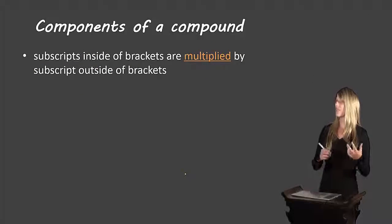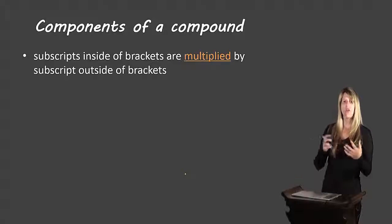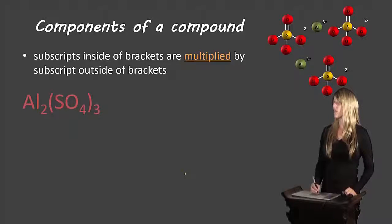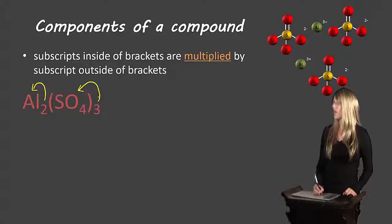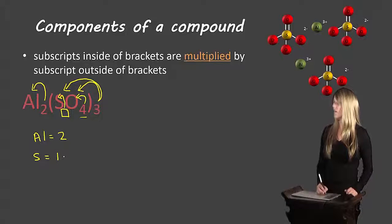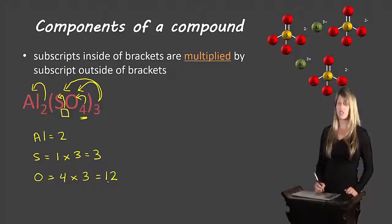Our last rule: subscripts inside brackets are multiplied by subscripts outside of brackets. Let's look at Al2(SO4)3. The two applies to the preceding aluminum. The three outside the brackets applies to both sulfur and oxygen. Sulfur has no subscript inside, meaning one, multiplied by three outside gives three sulfurs. Oxygen has a subscript of four inside, multiplied by three outside gives twelve oxygens. So: aluminum equals two, sulfur equals three, oxygen equals twelve.